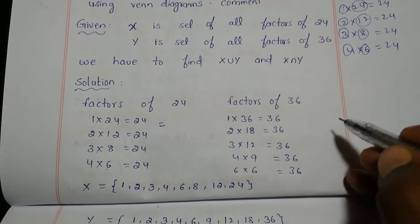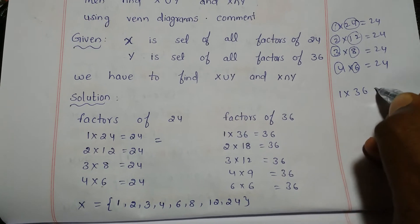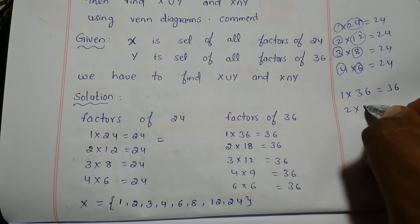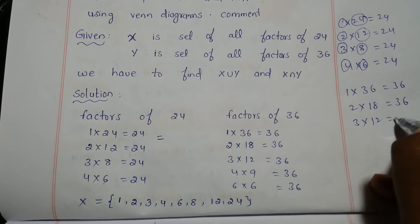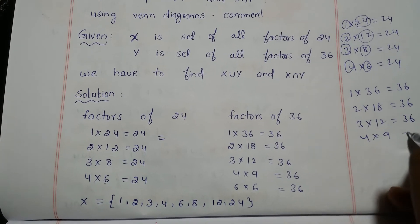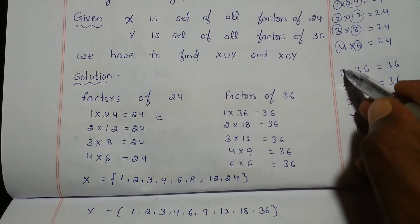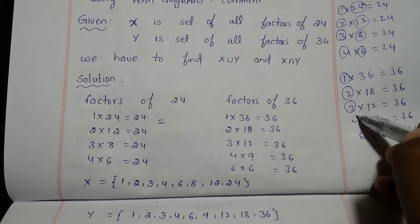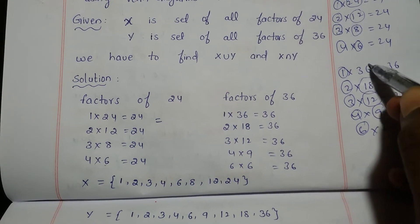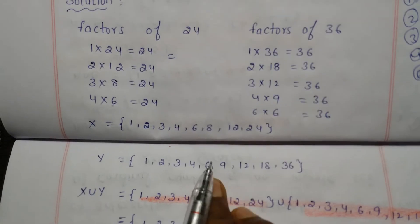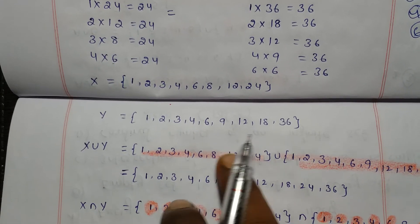Factors of 36: 1×36=36, 2×18=36, 3×12=36, 4×9=36, 6×6=36. So the set of all factors of 36 is {1, 2, 3, 4, 6, 9, 12, 18, 36}.